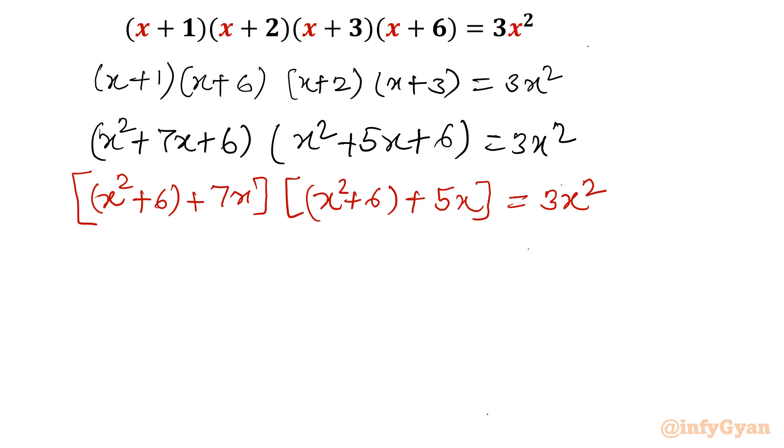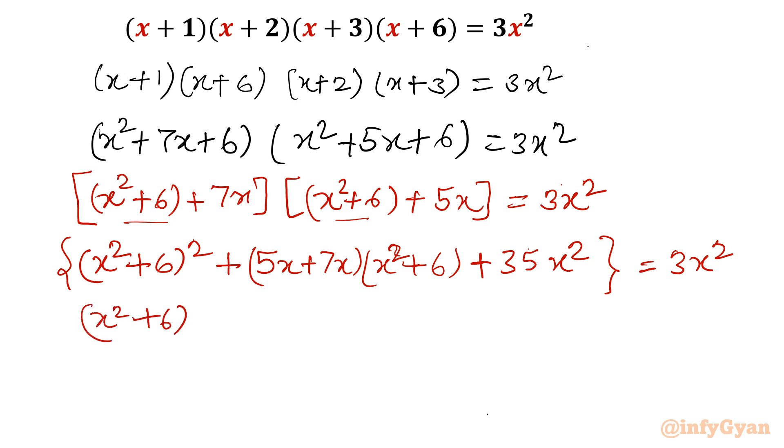Now I will take the product multiply both the equations. So I can write (x²+6)² plus 5x(x²+6) plus 7x(x²+6), so 35x². Now 5x plus 7x is 12x. So I will write this equation as (x²+6)² plus 12x(x²+6). And if I will take 3x² to the left then it will give us plus 32x² equal to 0.